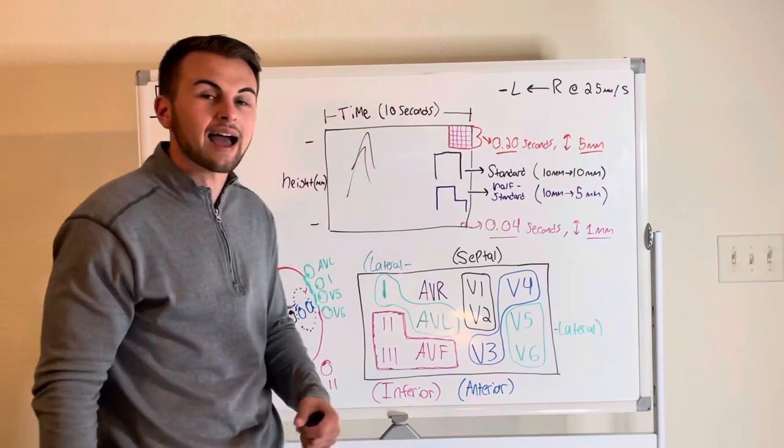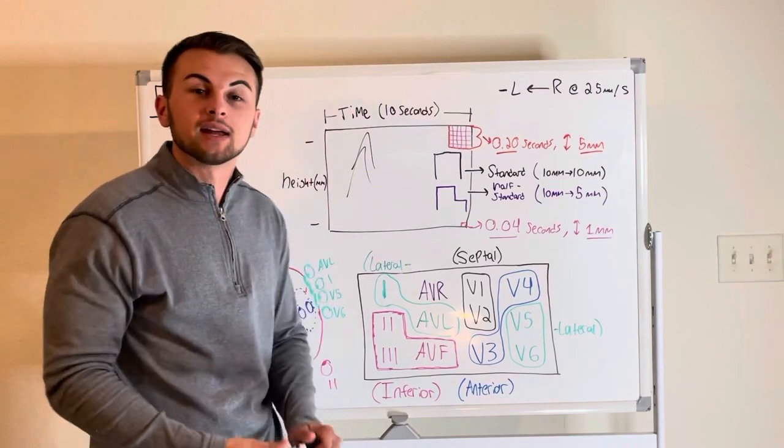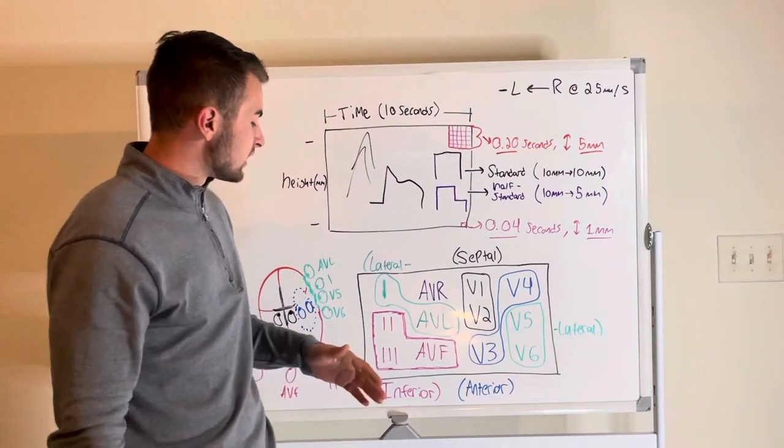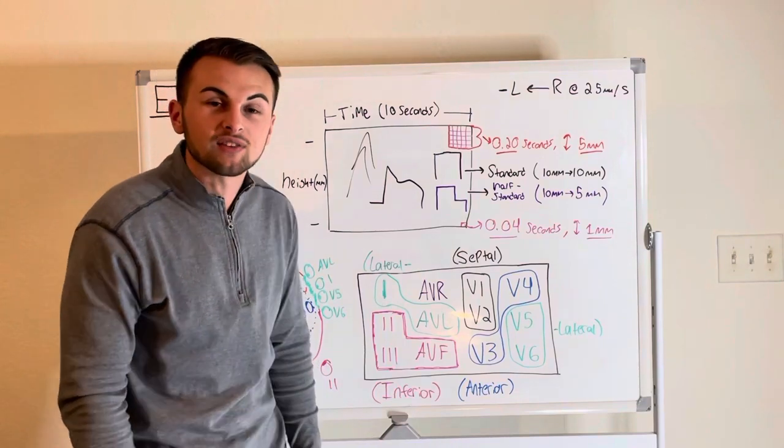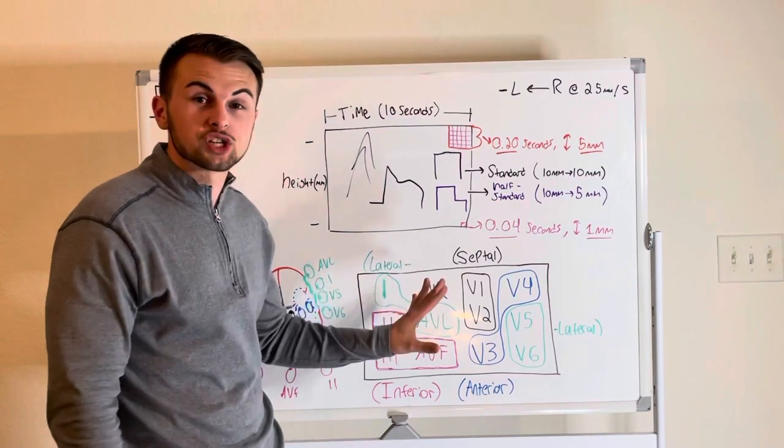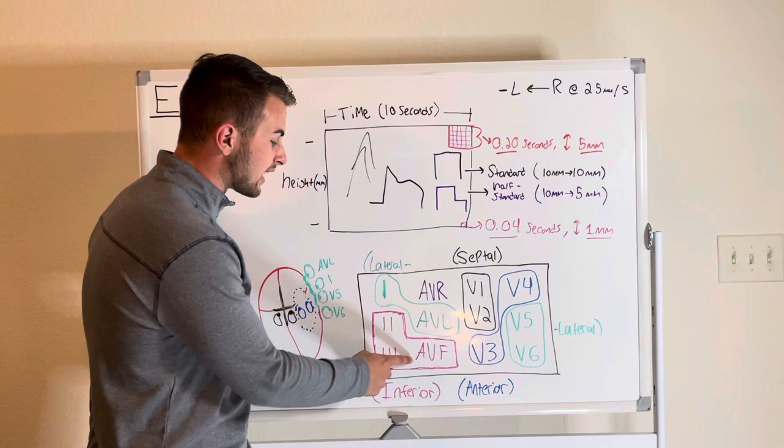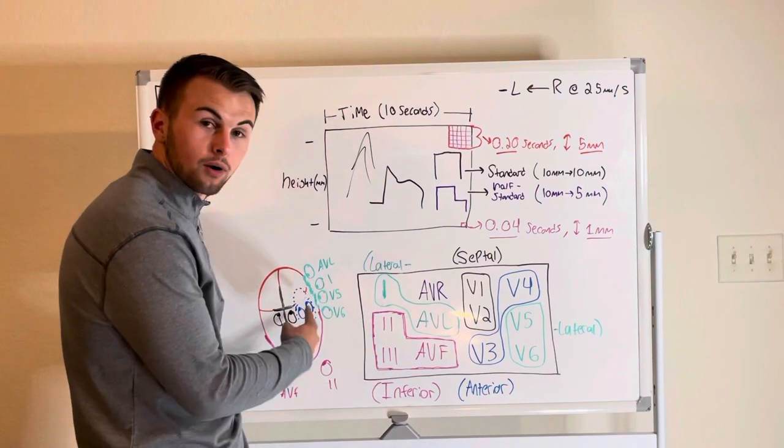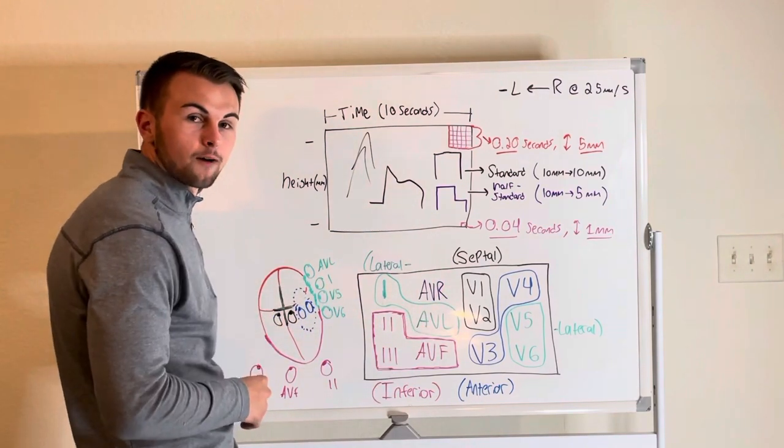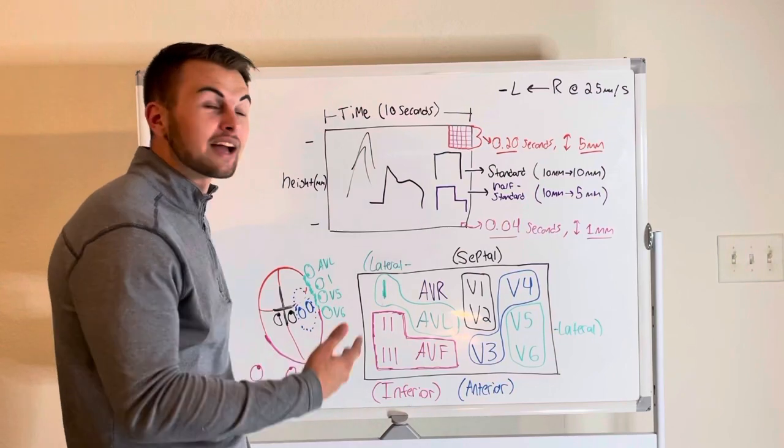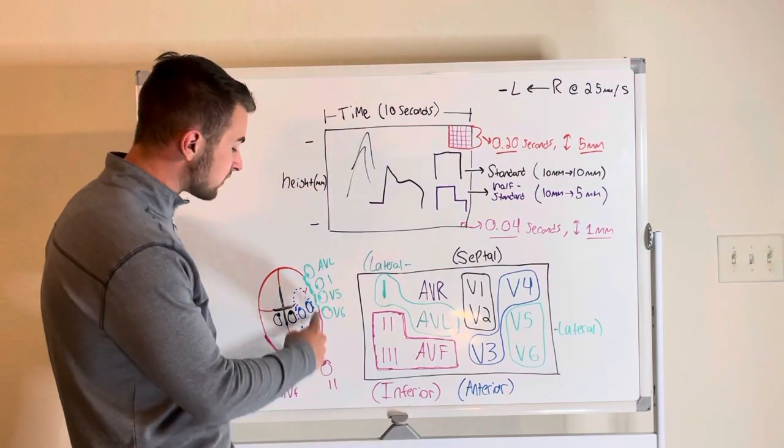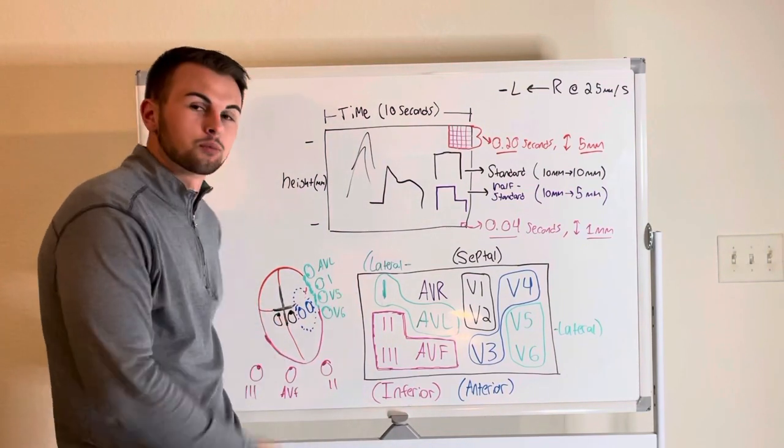So for example if we had an ST elevation meaning we had a complex that looks something like this in leads 2, 3, AVF, V1 and V2, we would be able to quickly use this cheat sheet to remember that 2, 3 and AVF represent the inferior part of the heart while leads V1 and V2 look at the septal portion of the heart. Therefore we would say that this patient likely has an ST elevated MI or STEMI in the inferior portion of the heart and in the septal portion of the heart.